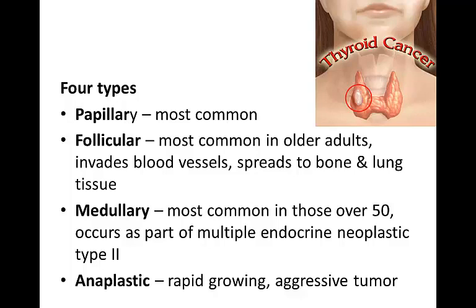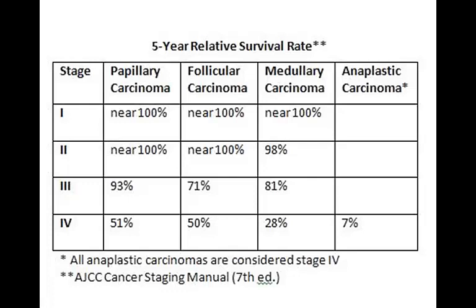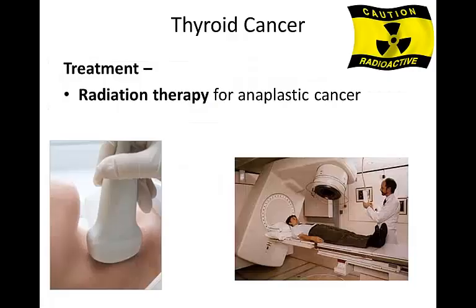This slide shows the projected cure rates based on stage. Stage 1 is early diagnosis and stage 4 is not. As you can see, anaplastic carcinoma is very deadly and is mostly found at end stage — stage 4 — carrying a very poor prognosis. Radiation therapy is the number one treatment for anaplastic cancer due to the likelihood of metastasis.